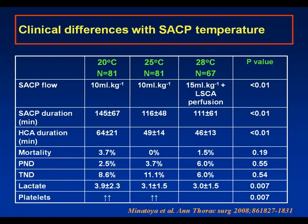Two years ago Minatoia et al. published in the Annals of Thoracic Surgery comparative groups when they instituted SACP at 20, 25, and 28 degrees centigrade. At 28 degrees centigrade they used a higher perfusion flow rate and less subclavian artery perfusion. The 20 degree group had longer SACP and corporeal arrest periods but mortalities were not different. With increased SACP and HCA duration there was a higher initial lactate on arrival in the ITU and higher consumption of transfused platelets.